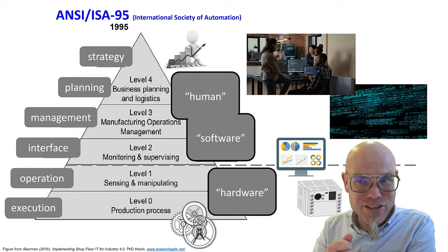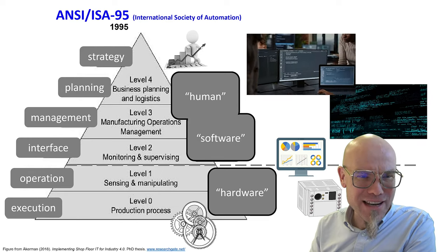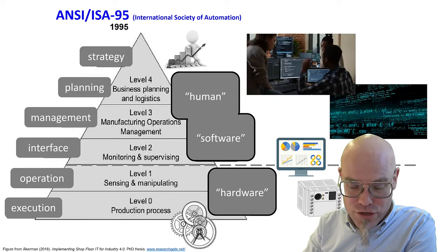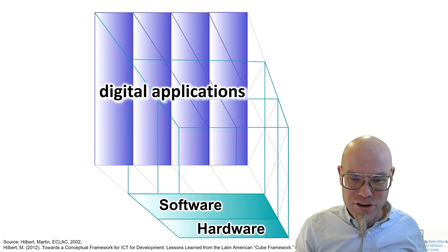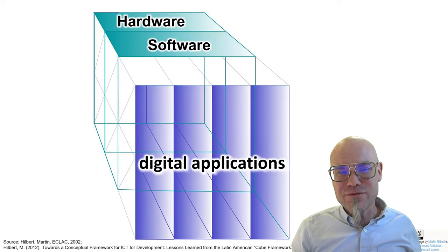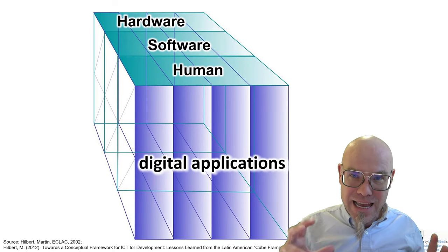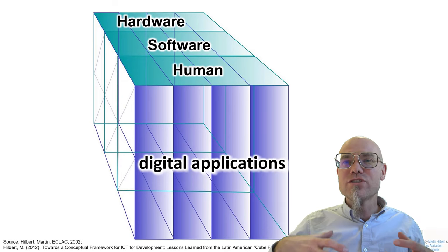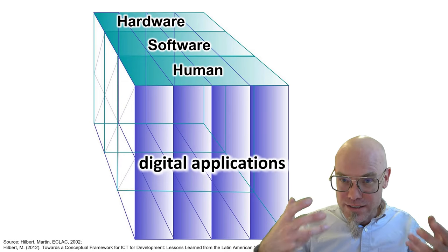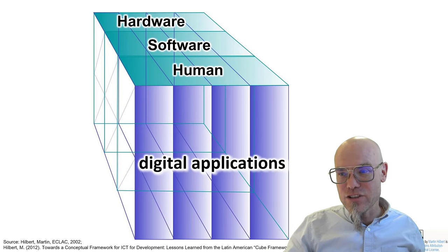That's the artificial intelligence alignment problem. Even though this framework is quite old — from the 1990s — it's still extremely useful. Going back to the cube, that's actually where I borrowed it from. We start with hardware and software, then bring the human into the loop — that's the management, the planning, the strategy, the user of the technology — which is then used to digitalize and algorithmify different aspects of society in the application layer.